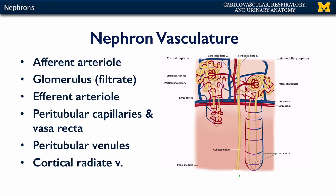The vasculature of the nephron looks exceedingly complex, but it can actually be quite simple. Coming around the bend is the arcuate artery, which spawns the cortical radiate artery. The cortical radiate artery gives rise to the afferent arterioles, and those afferent arterioles feed into the glomeruli. Coming off of the glomeruli are the efferent arterioles, which then spawn what are known as peritubular capillaries.